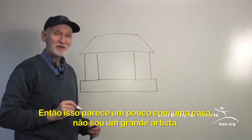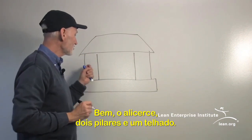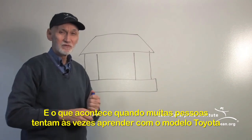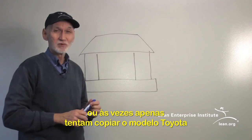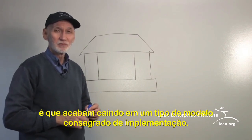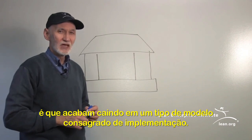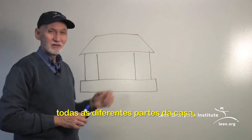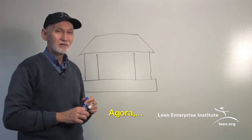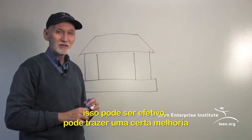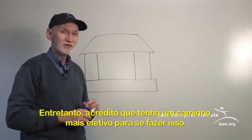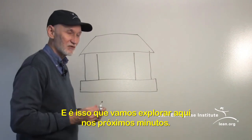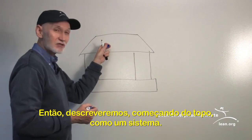So that should look something like a house — I'm not the greatest artist — but a foundation, two pillars, and a roof. What happened when a lot of folks tried to learn from, and sometimes just copy, the Toyota Production System is they defaulted into a prescriptive implementation model. They saw all the different tools and techniques and said, 'Let's go do those.' That can be effective in making a certain amount of improvement, but there's a more effective way, which we'll explore here.